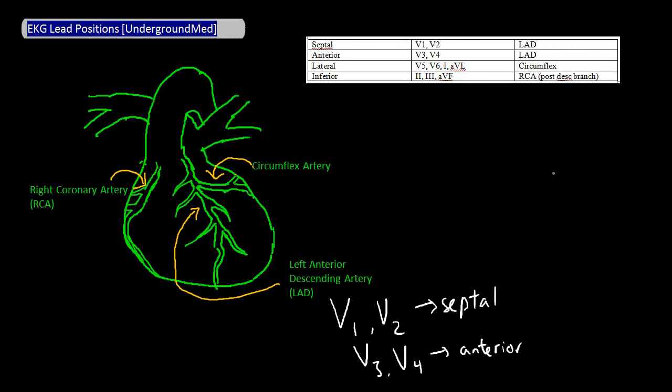You can apply the same logic to see that the leads within the circumflex artery's territory are V5, V6, lead 1, and AVL.